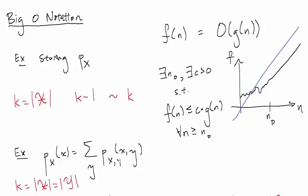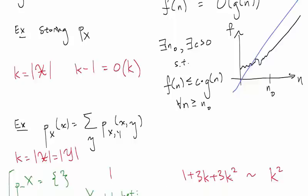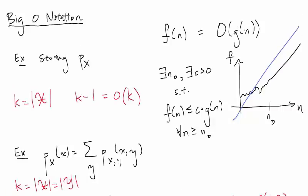So going back to our examples, we can of course write that k minus 1 is O of k and 1 plus 3k plus 3k squared is O of k squared. So that is big O notation in a nutshell.